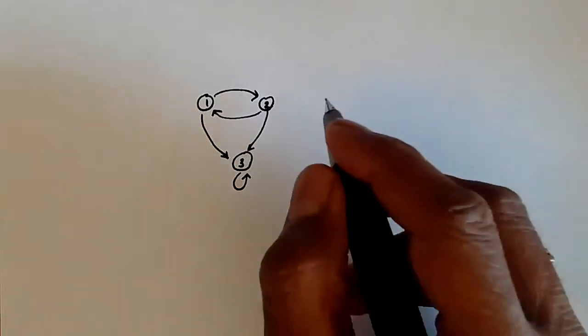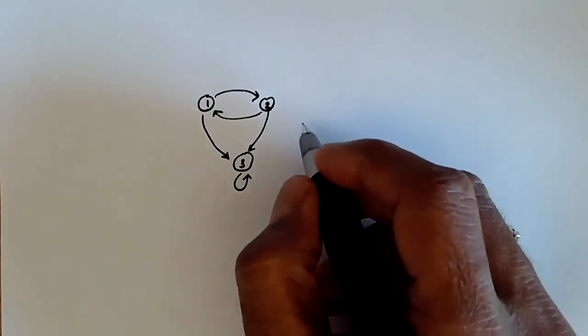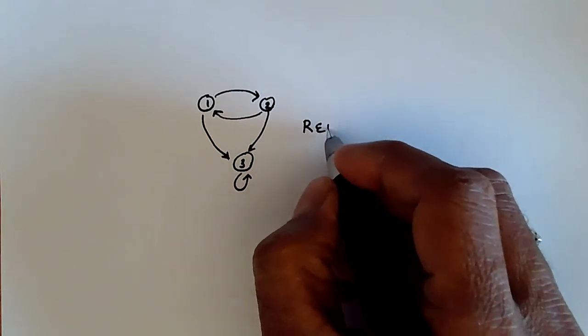Such a stochastic process has the property that every state cannot be reached from every other state, and we call such a stochastic process reducible.